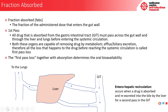The fraction absorbed is the fraction of the administered dose that enters the gut wall. All drug that is absorbed from the gastrointestinal tract (GIT) must pass through the gut wall and through the liver and lungs before entering the systemic circulation. Both the liver and the gut wall are capable of removing drug by metabolism, and you can also have efflux and biliary excretion from the liver. All the loss that happens to the drug before reaching the systemic circulation is called the first pass loss, and together with absorption, this determines the oral bioavailability.